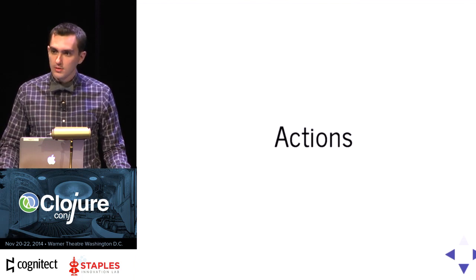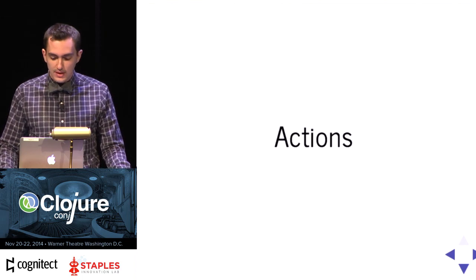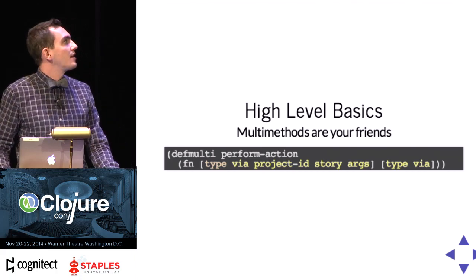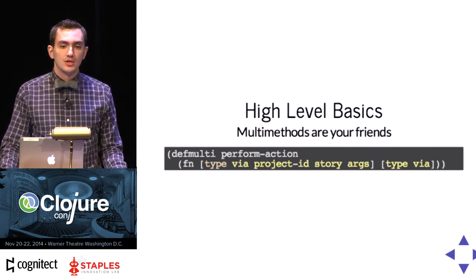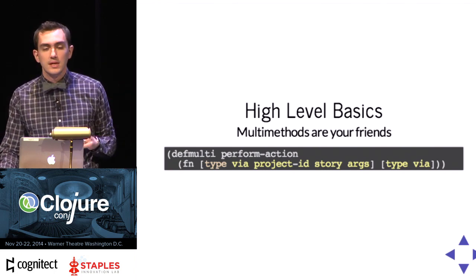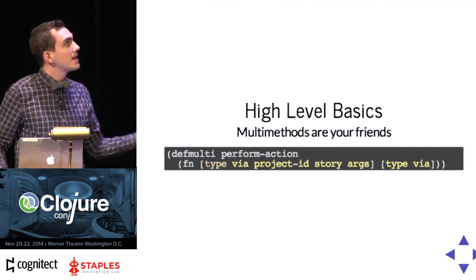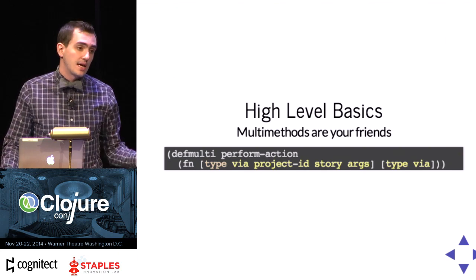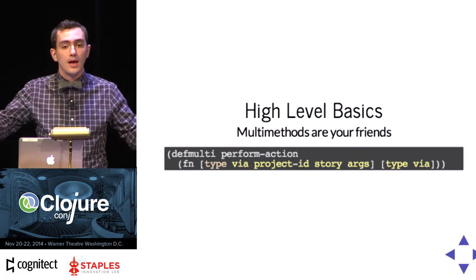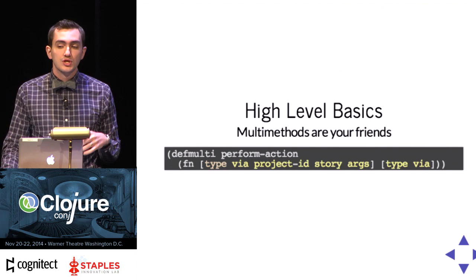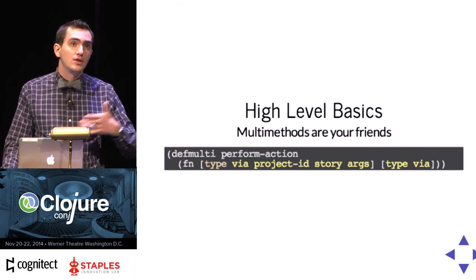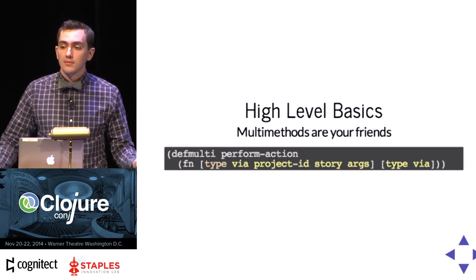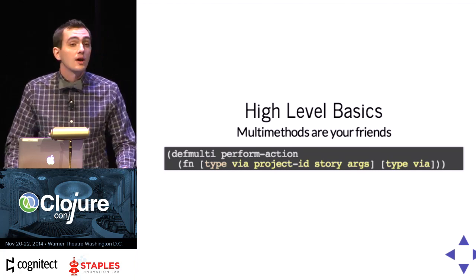Hash maps don't actually do things — you need actual code to go do things. At the highest level I would highly recommend multi-methods. I have a bunch of hash maps and two keywords which completely describe the intention of the action and then some arguments. So this is the multi-method for driving that: perform-action takes the type, the via argument, project ID, story, and args — and type and via are what decide which defmethod it goes to. When I intend to create a new type of action, I write a new defmethod and a new generator. As long as the new defmethod works, you're done — add it to a test and away we go. This also prevents a big nasty cond tree or if-tree inside your actual do-the-things code.